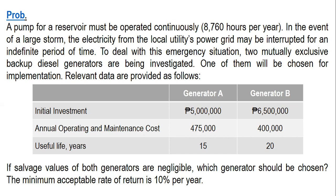Relevant data are provided as follows. For the two generators, initial investment is 5 million pesos for generator A and 6.5 million pesos for generator B. Annual operating and maintenance cost is 475,000 pesos for generator A and 400,000 pesos for generator B. Useful life is 15 years for generator A while for generator B it's 20 years.